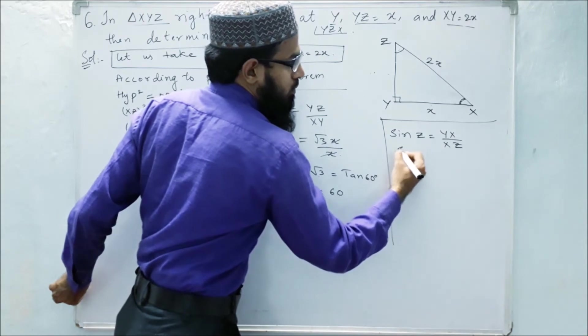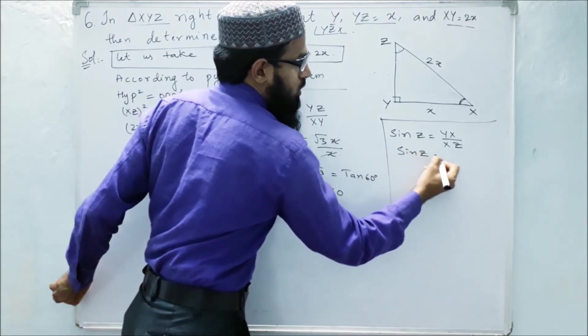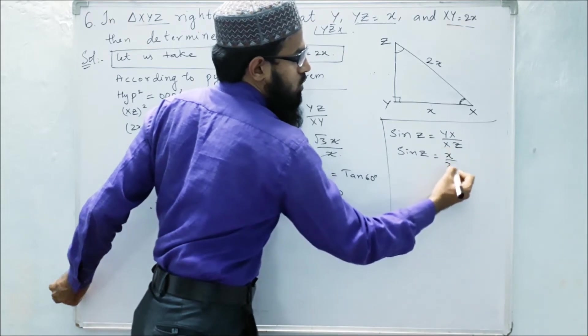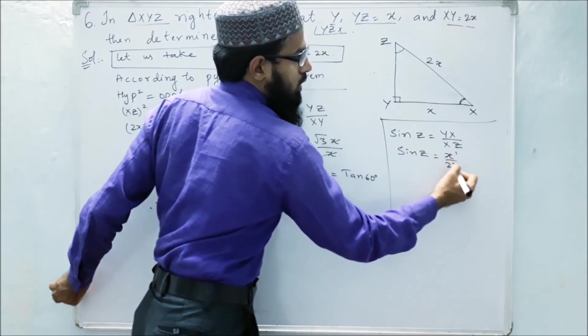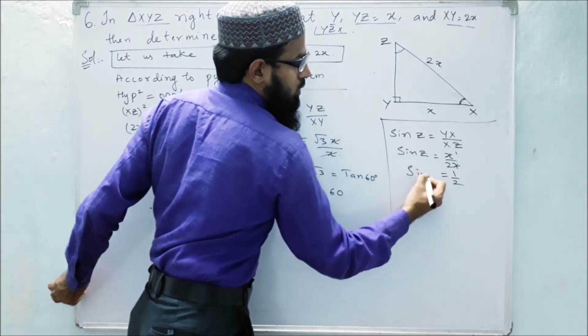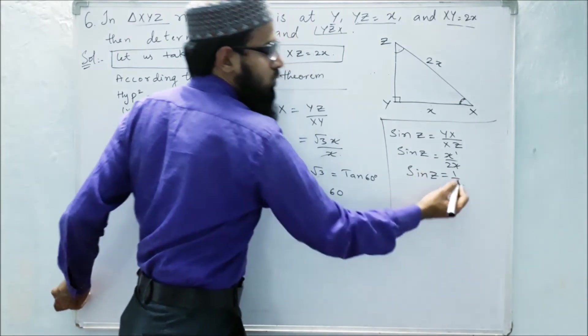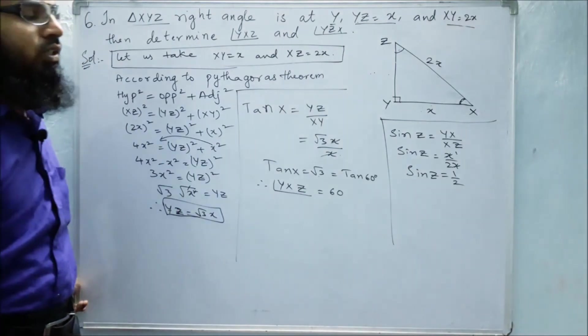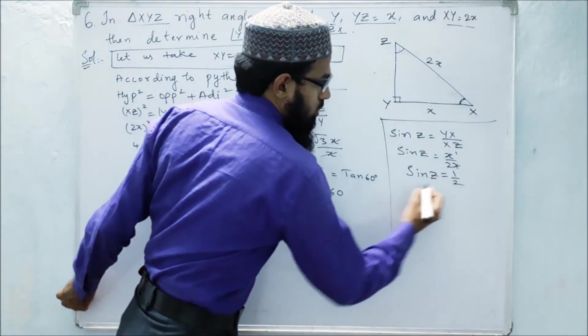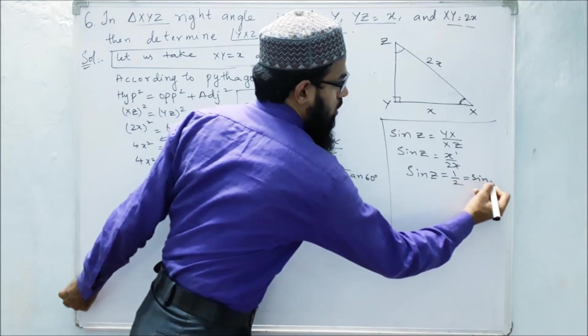Sin Z equals YX is x and XZ is 2x. x cancels. It is 1 by 2. Sin Z. So when do we get sin theta equals 1 by 2? When it is 30 degrees. So we get 30 degrees.